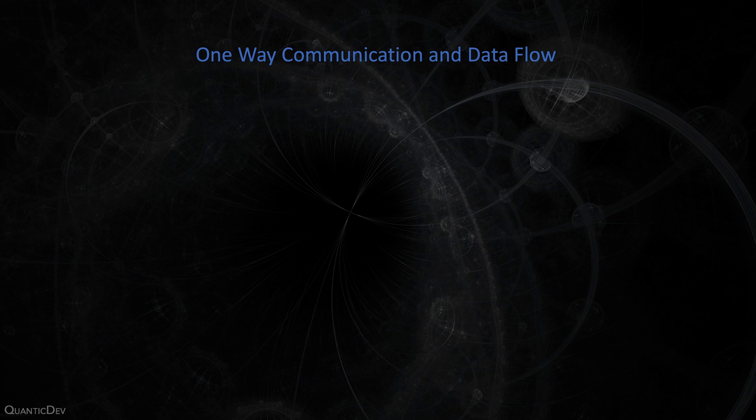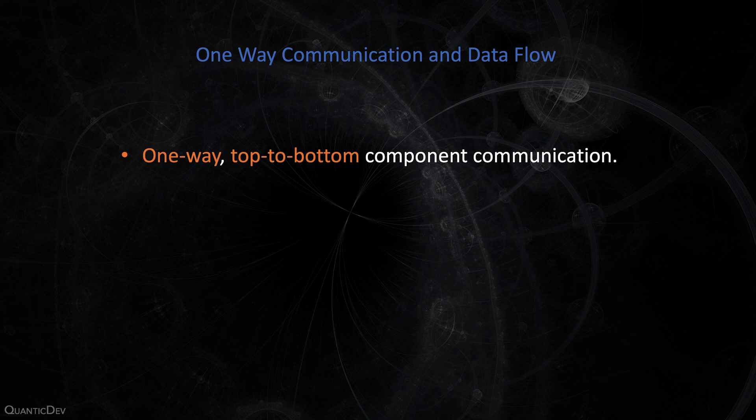10. One-Way Communication and Data Flow. Whenever possible, make sure that the components of your app communicate with each other in a one-way style of communication. Even better, use the top-to-bottom style. When communication and data flow from top to bottom in your app, it is easier to debug because you know where the data starts and where it ends. When each component chats with each other in a two-way manner, you lose the ability to debug easily since you can no longer follow the data properly.